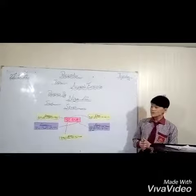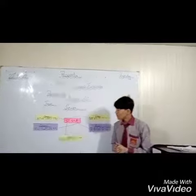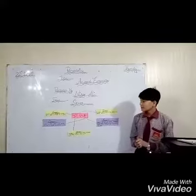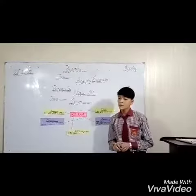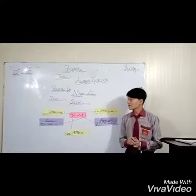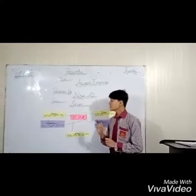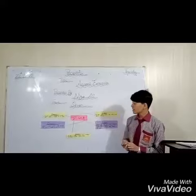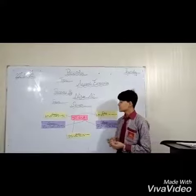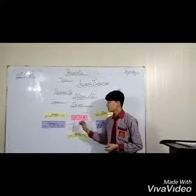The first part is coefficient. A number that is multiplied by a variable is called a coefficient. Our coefficient in algebraic expression is 5x.